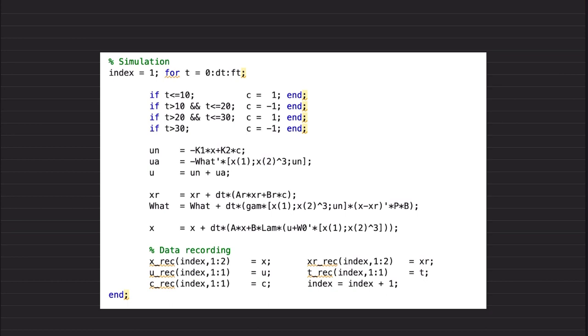Second part of the code is the implementation simulation part that just follows the previous page. There is a command, basically, that I apply: it is one for 10 seconds, then it is minus one—this is time minus one—the command changes like this for every 10 seconds. You can also use the square command of MATLAB.